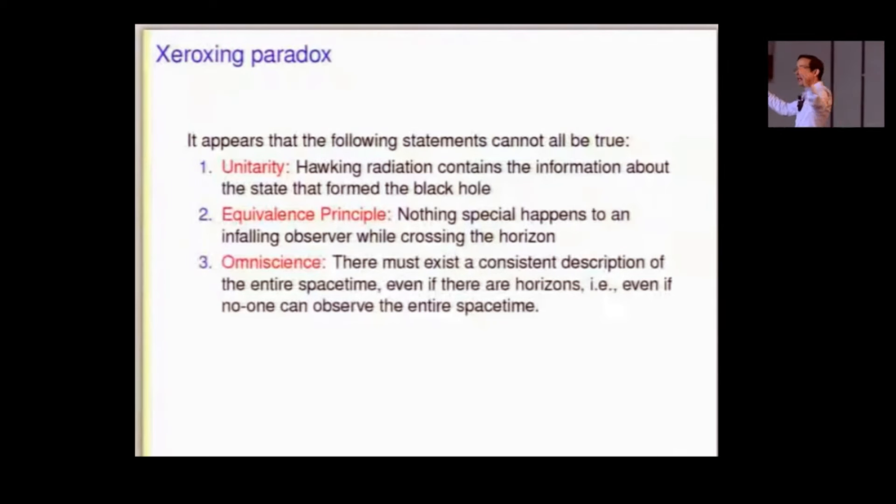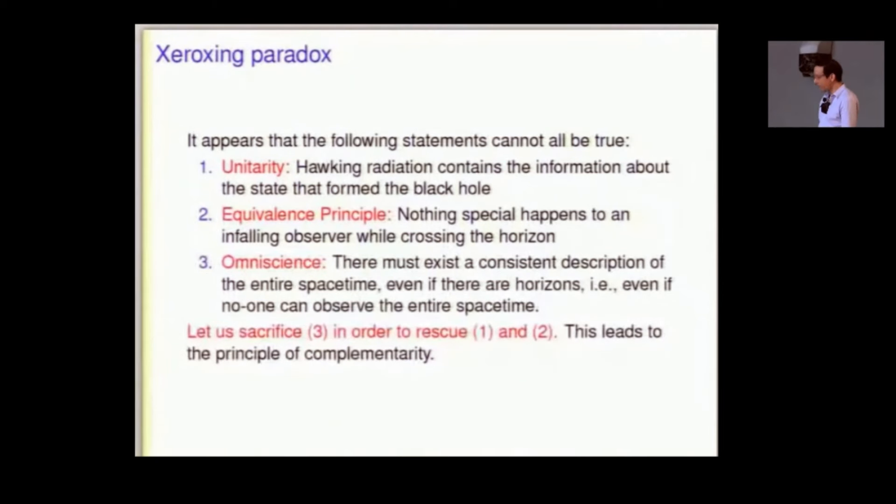The idea that there has to be a consistent description of the entire global space-time. If we insist on that, yes, then there are two copies made from one. That's bad. But if we ask only about what any one observer can see, well, any one observer does not see quantum Xeroxing. And so complementarity is simply the decision to sacrifice three in order to preserve one and two.